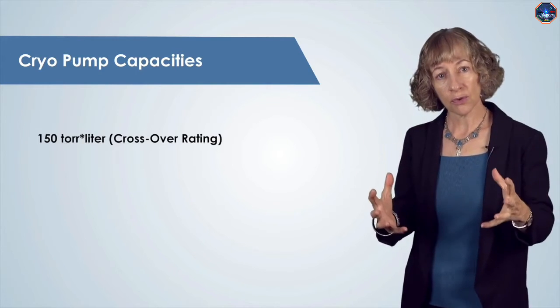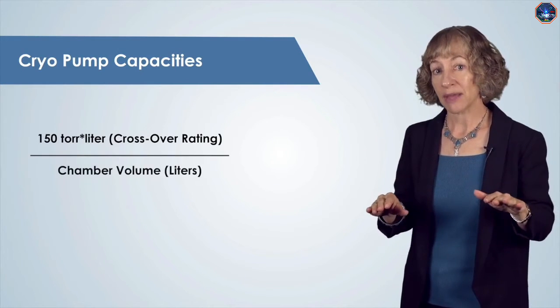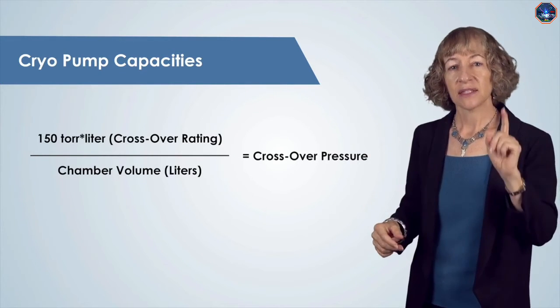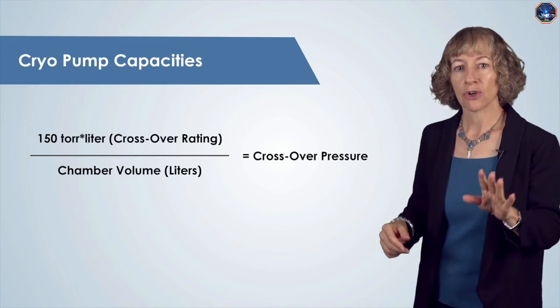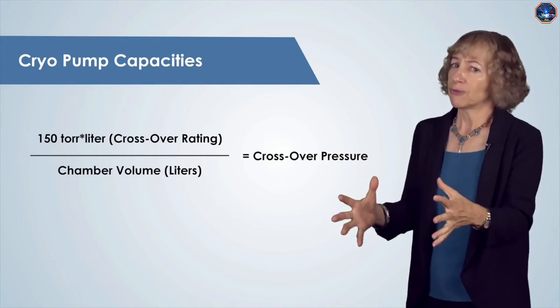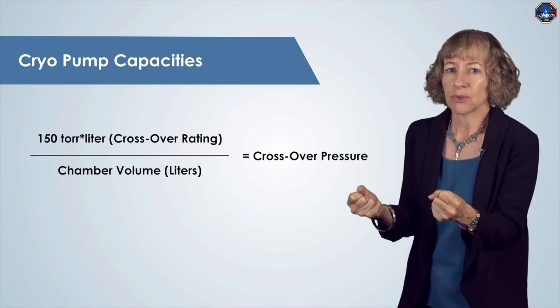As an example, if a cryo pump has a 150 torr liter crossover rating, then we take that crossover rating and divide by the chamber volume to calculate the crossover pressure. That's the maximum pressure for crossover from the mechanical pump to the cryo pump, or you'll be freezing too many air molecules and you'll have to regenerate too quickly.